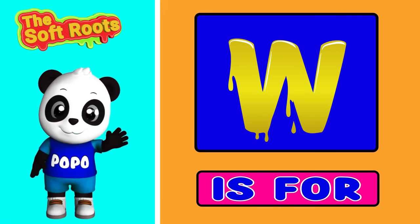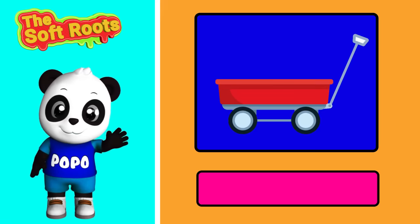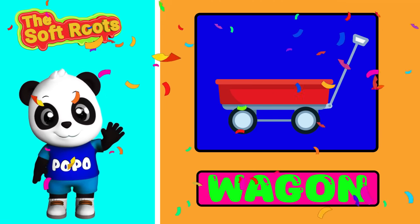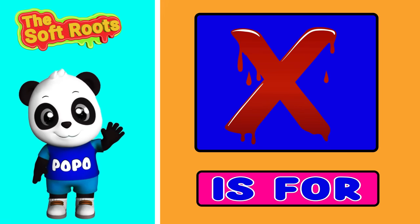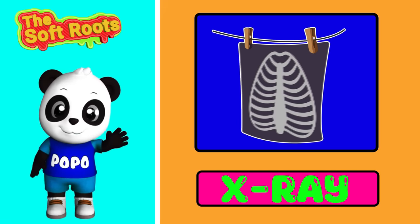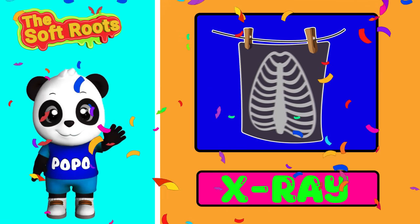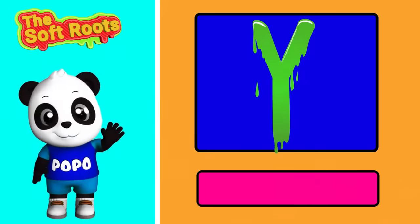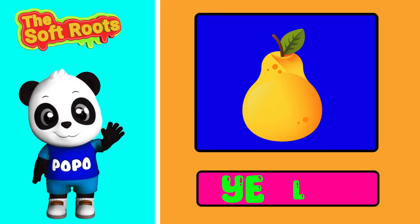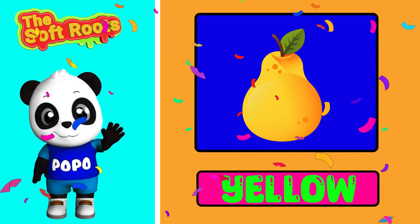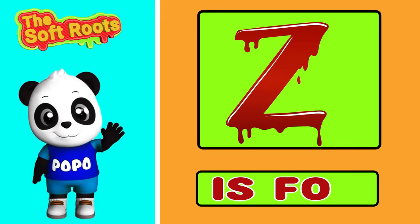W is for Wagon. X is for X-ray. Y is for Yellow. Z is for Zoo.